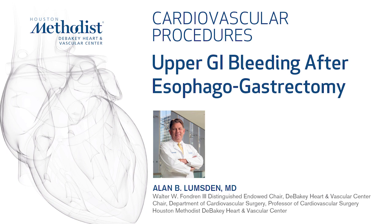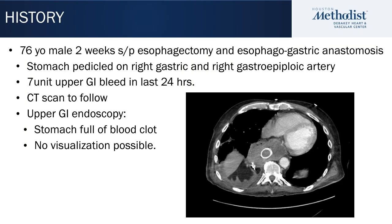We're going to discuss an interesting case. This is a 76-year-old man who is two weeks status post esophageal gastrectomy. He had an esophageal gastric anastomosis up in his chest. The proximal stomach was resected, and the stomach remnant was pedicled on the right gastric and the right gastroepiploic artery. He had a 7-unit upper GI bleed in the last 24 hours and was hemodynamically unstable.